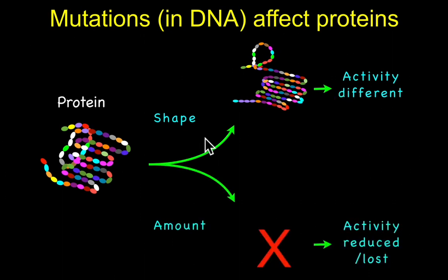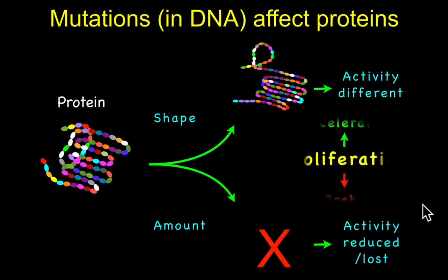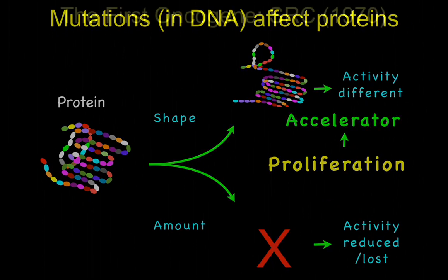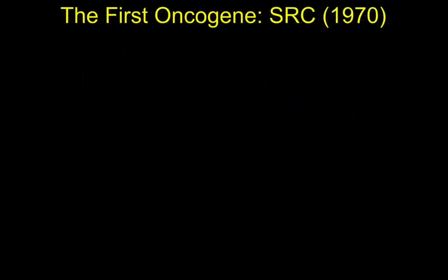Conversely, a mutation may reduce a protein's activity or knock it out altogether. These two features can combine to accelerate proliferation: a hyperactive protein acts as an accelerator, and losing protein activity removes a brake on proliferation. The upshot is that cells are prompted to enter the cell division cycle much more rapidly than usual and behave abnormally. The first such oncoprotein — encoded by an oncogene — was identified in 1970, known as SRC, discovered in the Rous sarcoma virus.